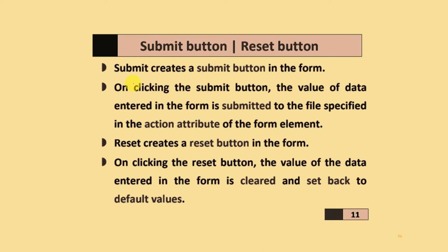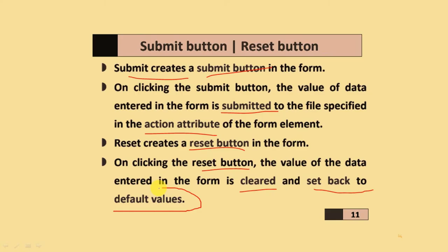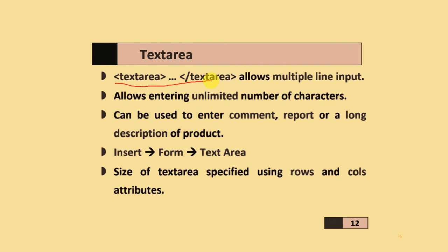The submit button creates a submit button in the form. On clicking it, the data entered in the form is submitted to the file specified in the action attribute of the form element. The reset button creates a reset button in the form. On clicking it, the data entered in the form is cleared and set back to the default values.